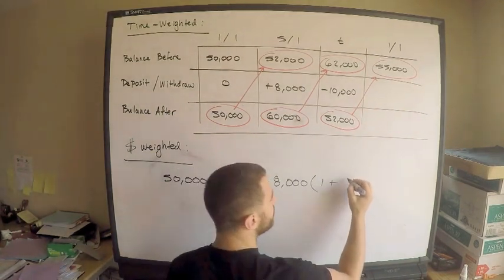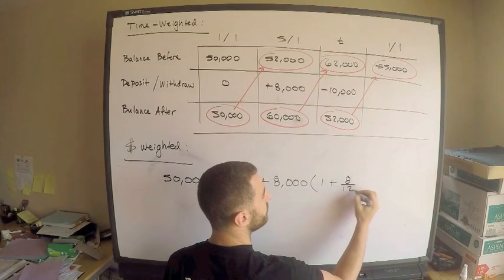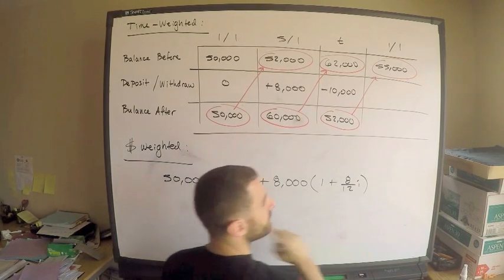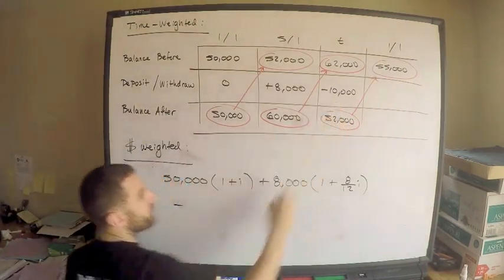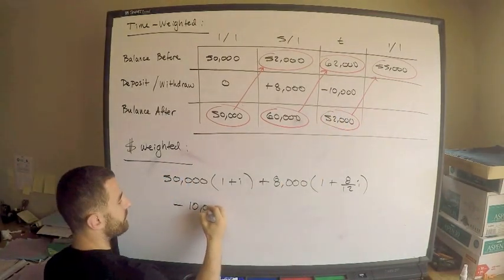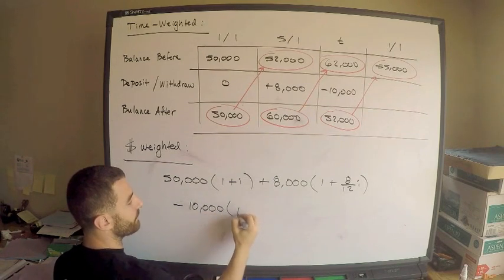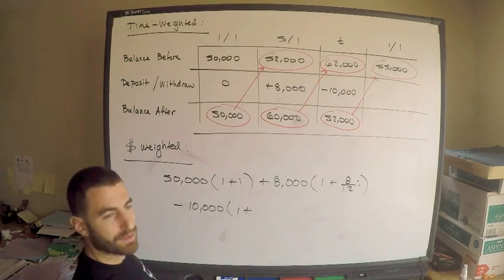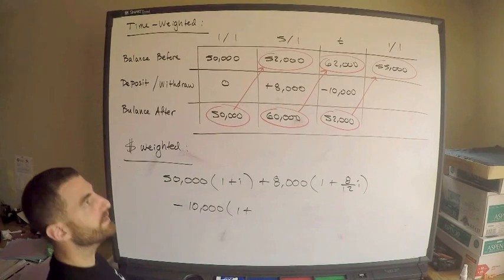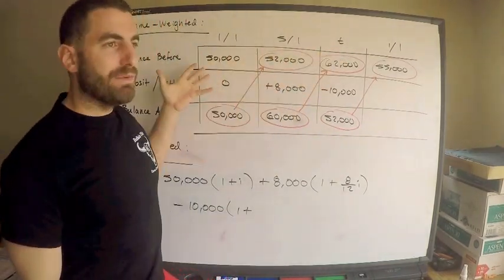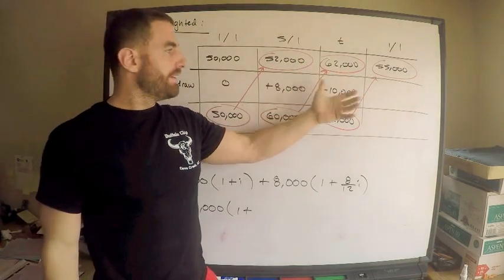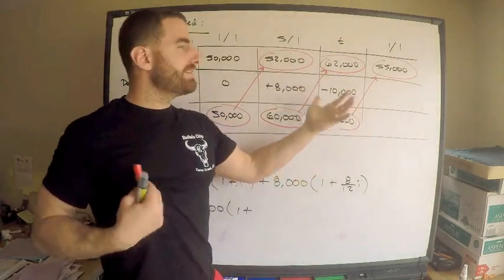This is 1 plus, I'm using simple interest, 8 over 12 times i. Now I need to minus this withdrawal of $10,000. How long does $10,000 accumulate for?